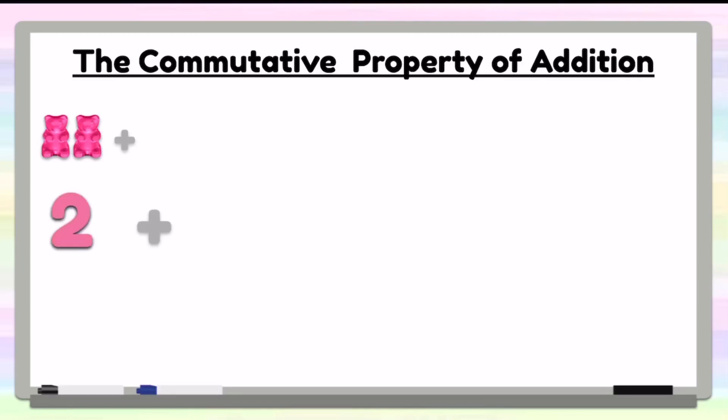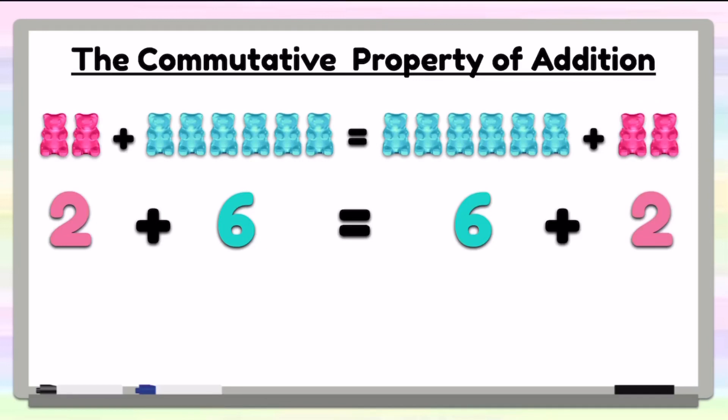2 gummy bears plus 6 gummy bears is going to be the same thing as 6 gummy bears plus 2 gummy bears because 2 plus 6 equals 6 plus 2. Both sides will still give us just 8 gummy bears.